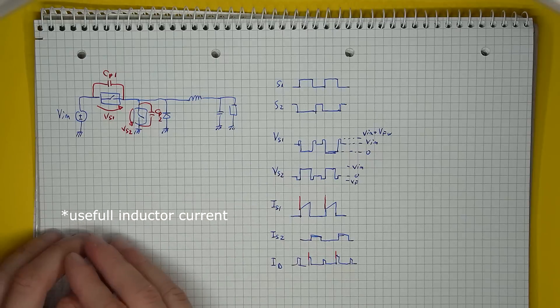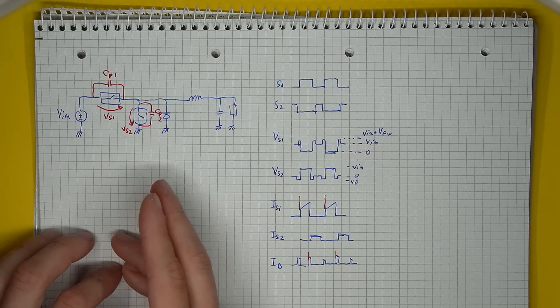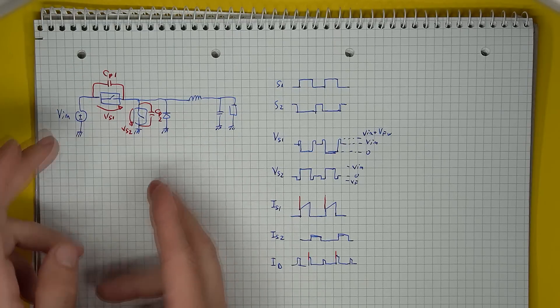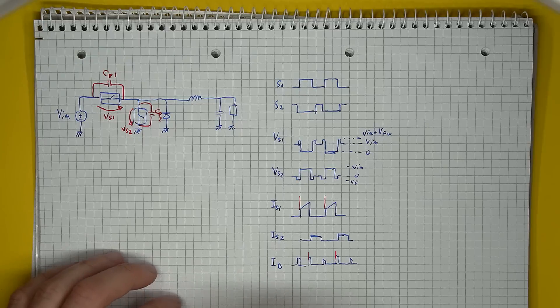And charging the ones from the other components, leading to current spikes. This is most obvious on the high side switch.